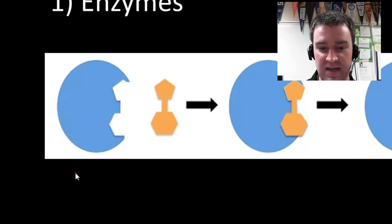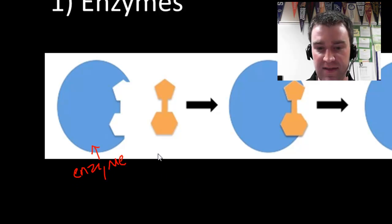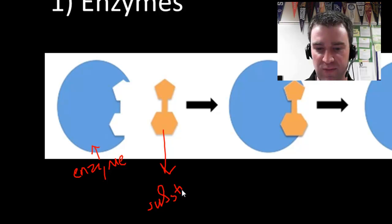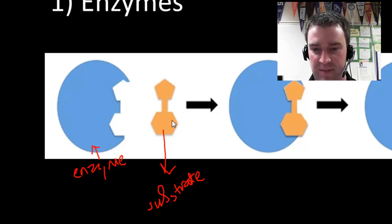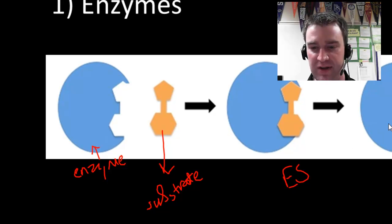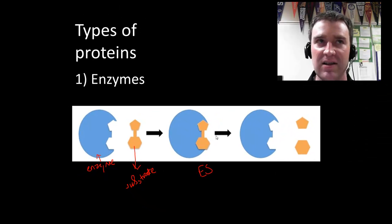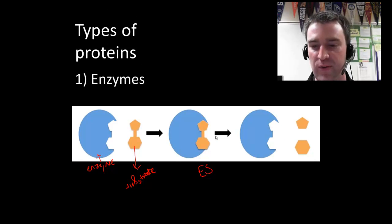The enzyme itself is shown in blue here, and the chemical it interacts with — every enzyme has a particular chemical that it interacts with, and we call it the substrate. This particular enzyme interacts with this chemical, it binds, and forms what's called the enzyme-substrate complex. Then it allows the substrate to undergo a chemical reaction, speeds up that reaction, and then releases the products.